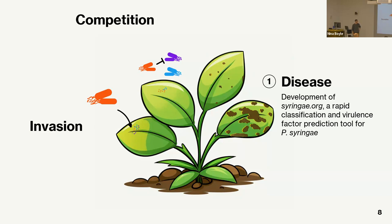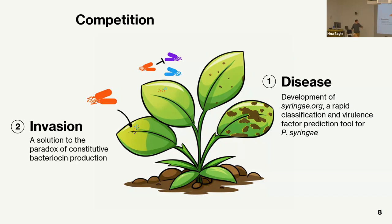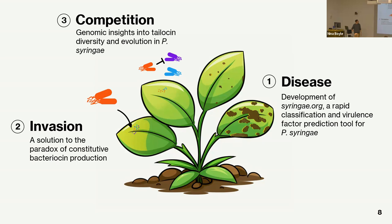I'm going to spend a lot of time talking about the very early stages of disease — when bacteria first land on the surface, try to establish themselves in this harsh environment, and compete with bacteria on the leaf surface. If they're successful, they eventually cause disease inside. The first project focuses on identifying who's causing disease and developing a tool and website for plant pathologists. Then I'll jump back to the beginning and talk about bacteriocins — toxins used by Pseudomonas syringae to out-compete competitors.